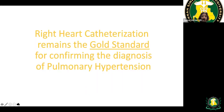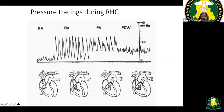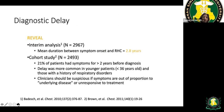Right heart catheterization is the gold standard to confirm the diagnosis of pulmonary hypertension. As the catheter advances through the cardiac chambers, tracings change: right atrial pressure is around 8–10; entering the right ventricle shows increased systolic pressure; in the pulmonary artery there is a diastolic increase; and in the wedge position there is dampening of the systolic upstroke. Deflating the balloon returns the tracing to normal PA catheter waveform.